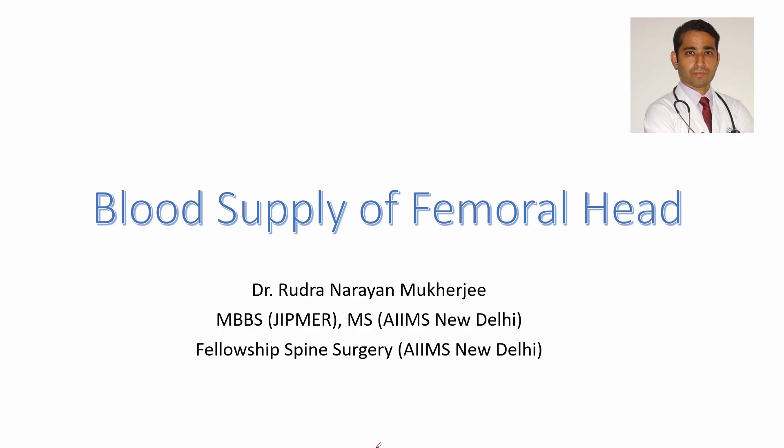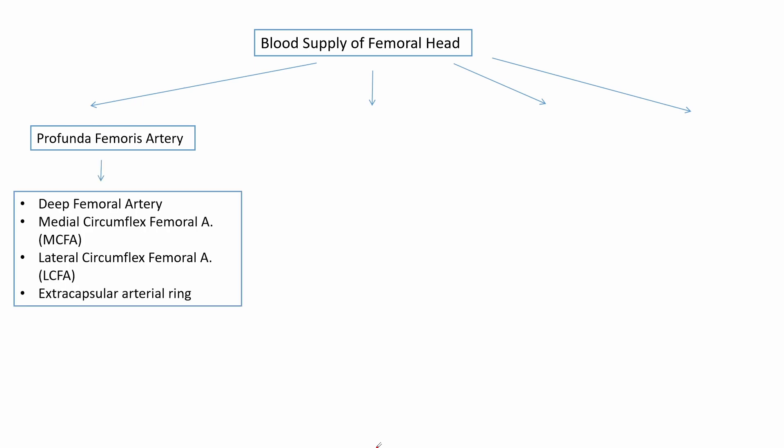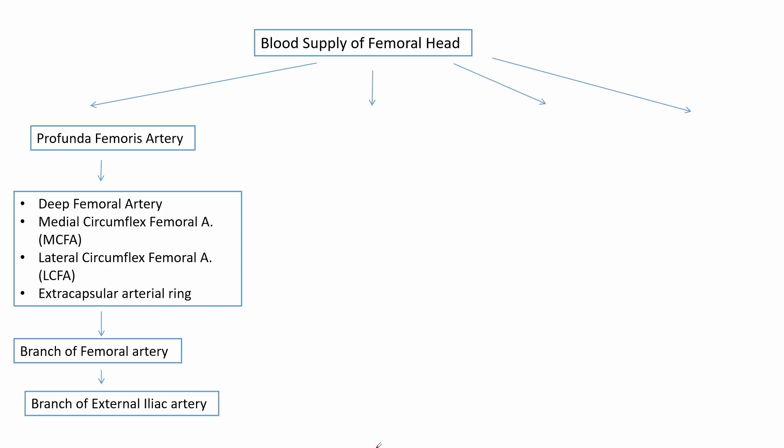Blood supply of the femoral head. The femoral head receives its blood supply from four arteries. The first is the profunda femoris artery, which is the major supply to the femoral head. It is also known as the deep femoral artery. It gives off the medial circumflex femoral artery and the lateral circumflex femoral artery, which form the extracapsular arterial ring. The profunda femoris artery is a branch of the femoral artery, which is a branch of the external iliac artery.